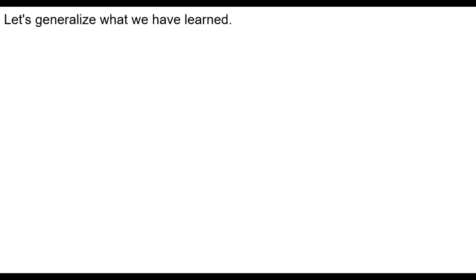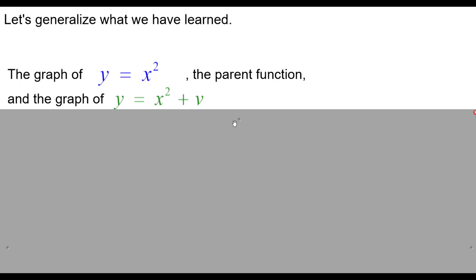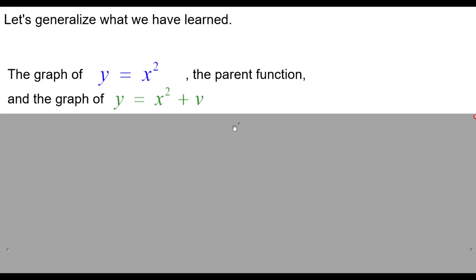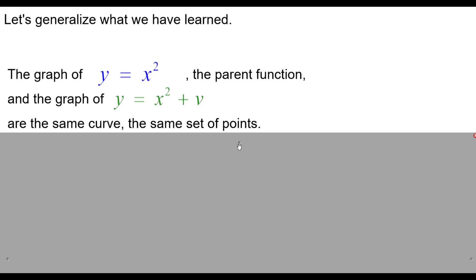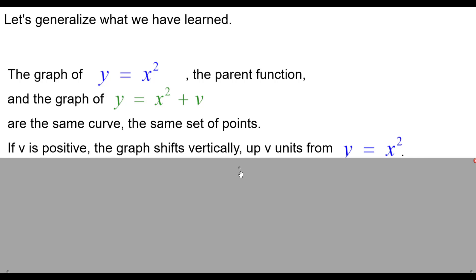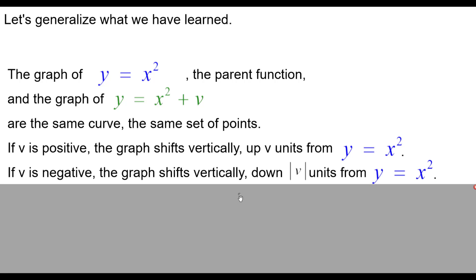Let's generalize what we've learned. The graph of y equals x squared, the parent function, and the graph of y equals x squared plus v, some constant v in green, are the same curve — the same set of points. But if v is positive, the graph shifts up vertically v units from y equals x squared. While if v is negative, the graph shifts down vertically the absolute value of v units from y equals x squared.